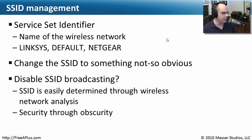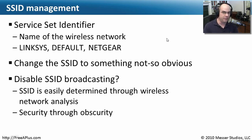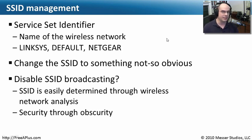Another option you can change is SSID broadcasting. If you've ever used a wireless device — a laptop or a mobile device — and searched for available wireless networks, it gives you a big list. That list exists because wireless access points are configured to automatically broadcast themselves to everybody nearby, specifically so you can find them easily. But if you don't want your wireless access point listed, you can disable the SSID broadcast.